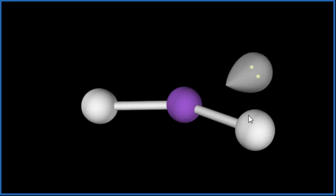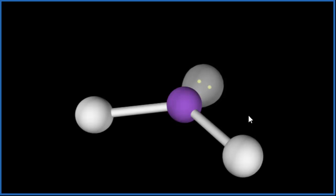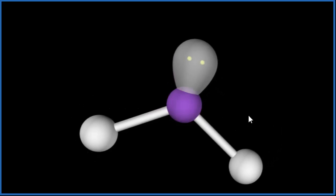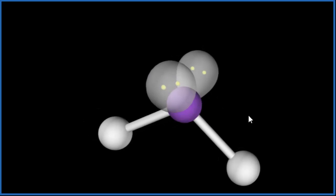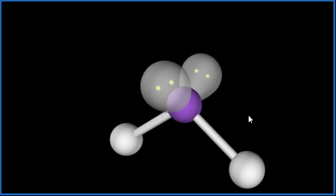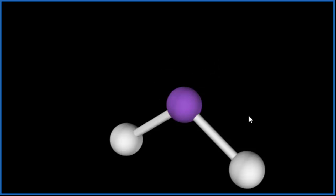Let's add the lone pairs. There's one, and they're pushing the chlorine atoms away. We're going to add one more lone pair, and there we have it. And we end up with a bent molecular geometry. So you can see if I hide the lone pairs, there's that bent molecular geometry.